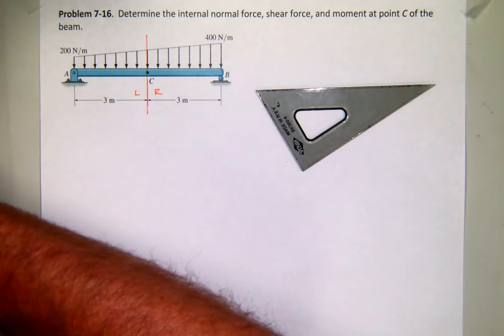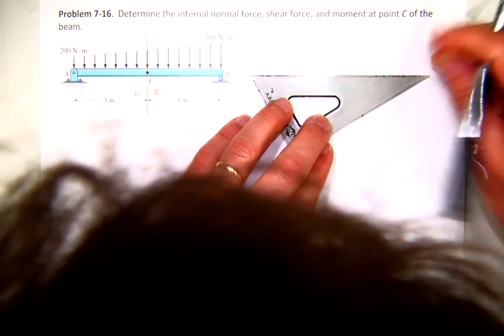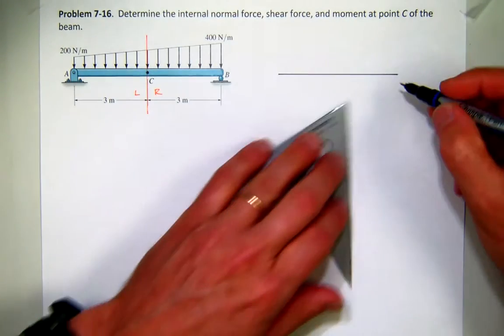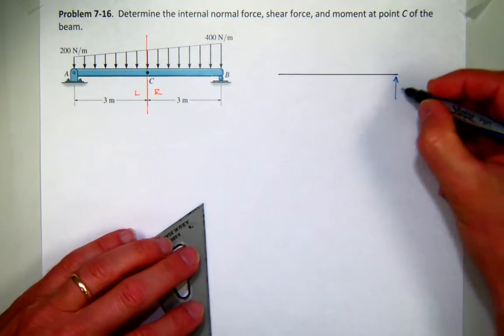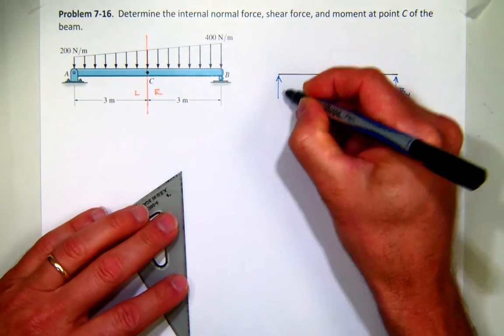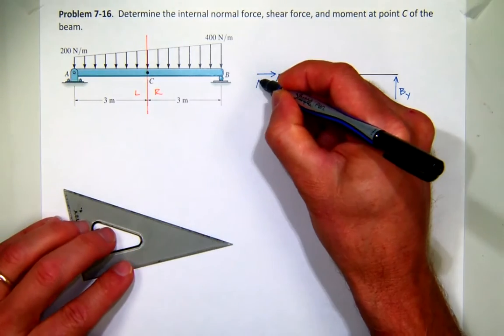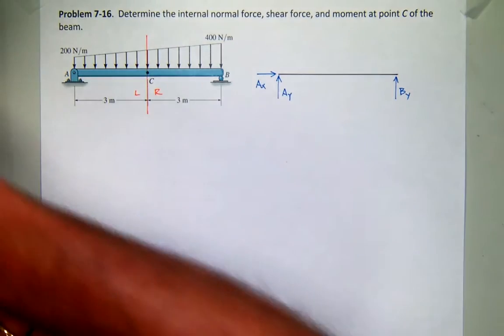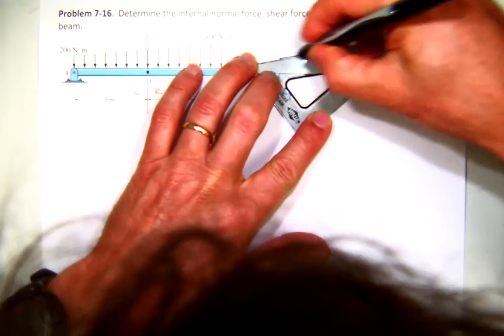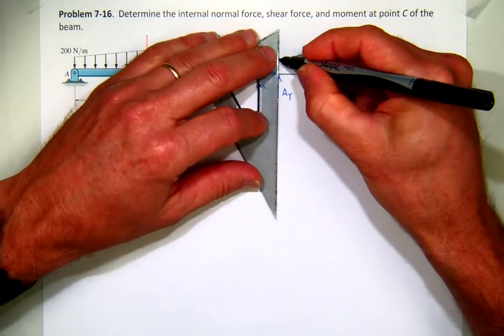So let's begin. We're going to have to find the reaction over there at B. So I'll draw a free body diagram of the whole structure, and I'll assume a reaction BY and at the pin AY and AX.